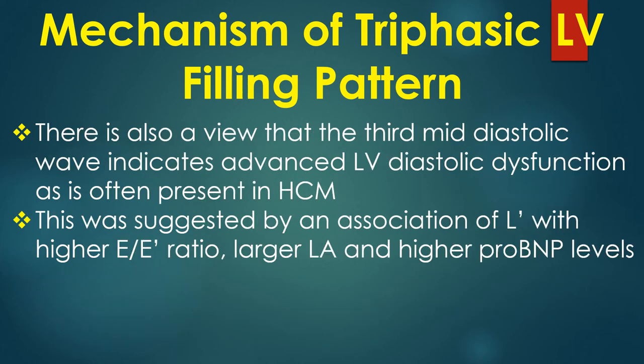There is also a view that the third middiastolic wave indicates advanced left ventricular diastolic dysfunction, as is often present in hypertrophic cardiomyopathy. This was suggested by an association of L prime with a higher E to E prime ratio, a larger left atrium, and higher NT-proBNP levels.